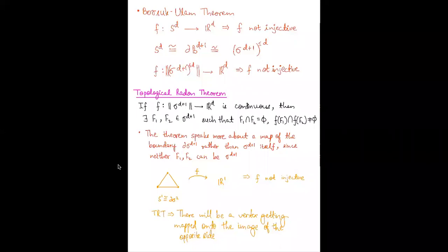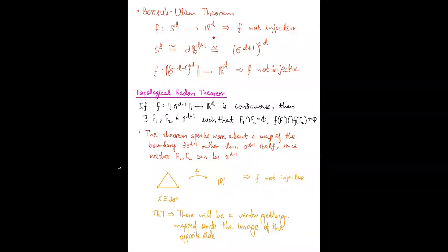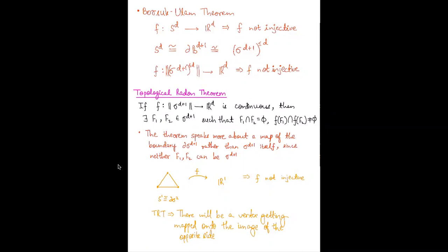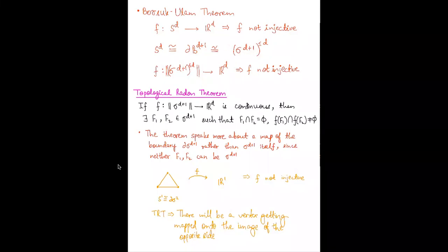We have seen how the Borsuk-Ulam theorem tells us that there can be no continuous map f from S^d to R^d, because we know that there will be a pair of antipodes which get mapped to the same point. S^d is the boundary of the d+1 dimensional ball, which is homeomorphic to the d+1 simplex. So what Borsuk-Ulam is telling us is that if you have a map from this boundary to R^d, then f cannot be injective.